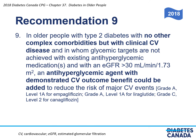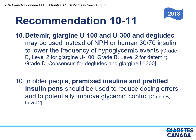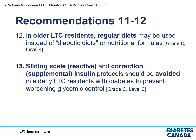In older people with type 2 diabetes, no complex comorbidities, but with clinical cardiovascular disease, where glycemic targets are not achieved and GFR is greater than 30, an antihyperglycemic agent with demonstrated CV outcome benefit could be added — including empagliflozin, liraglutide, and canagliflozin. Detemir, glargine U100 and U300, and degludec may be used instead of NPH or human 30/70 insulin to lower hypoglycemia frequency. Pre-mixed and pre-filled insulin pens should be used in older people to reduce dosing errors and potentially improve glycemic control. In older long-term care residents, regular diets may be used instead of diabetic diets or nutritional formulas. Sliding scale, reactive, and correction supplemental insulin protocols should be avoided in elderly long-term care residents to prevent worsening glycemic control and reduce hypoglycemia risk.